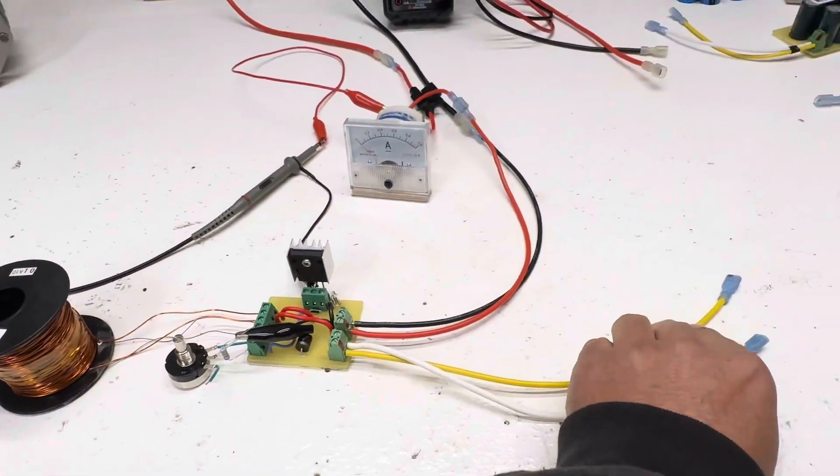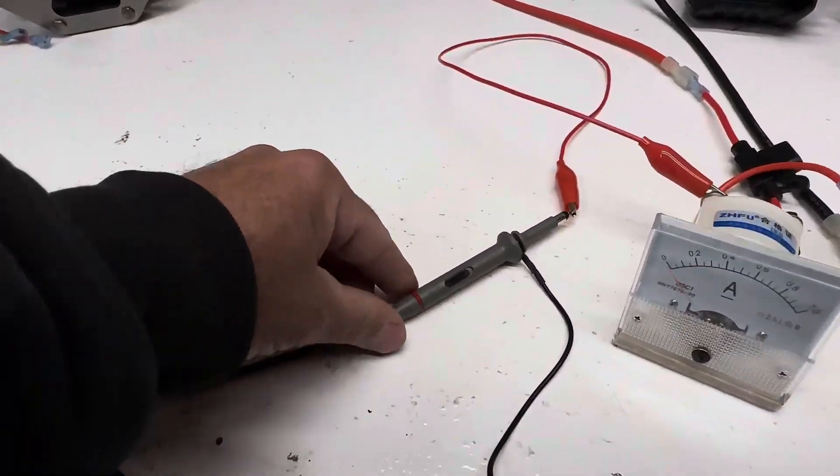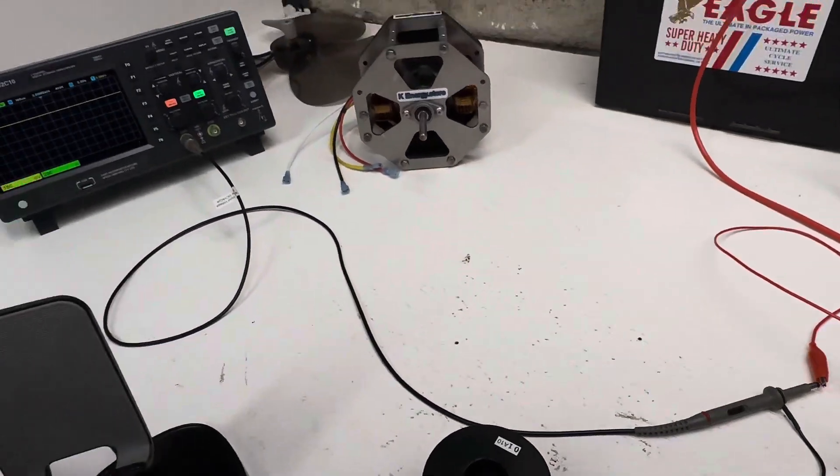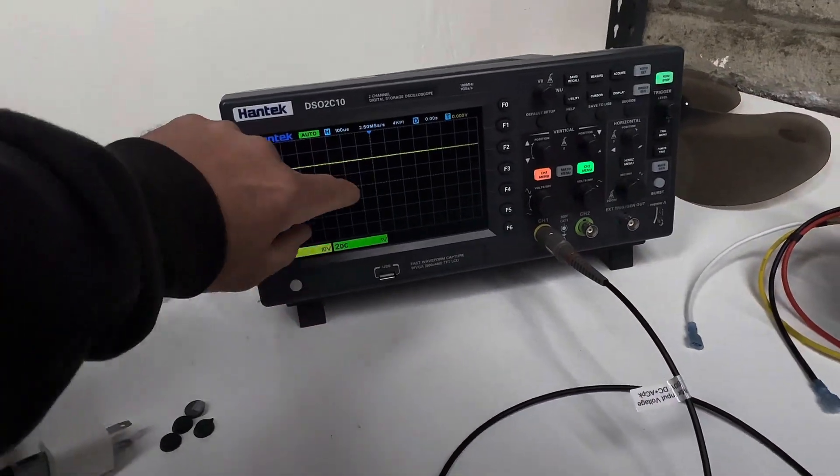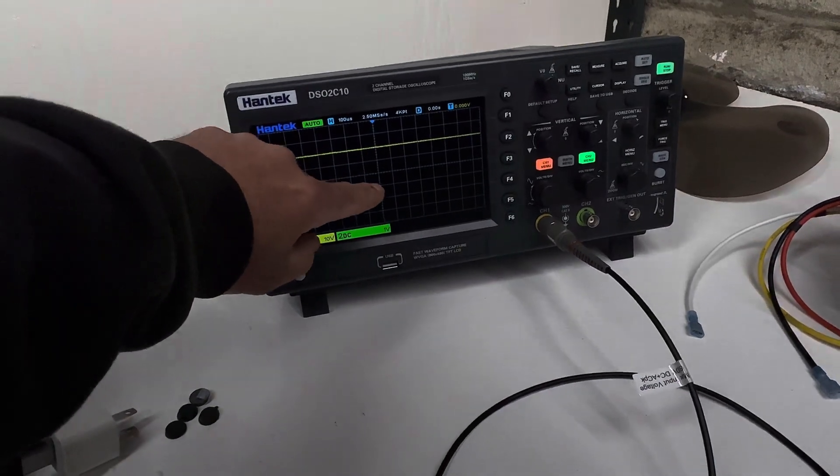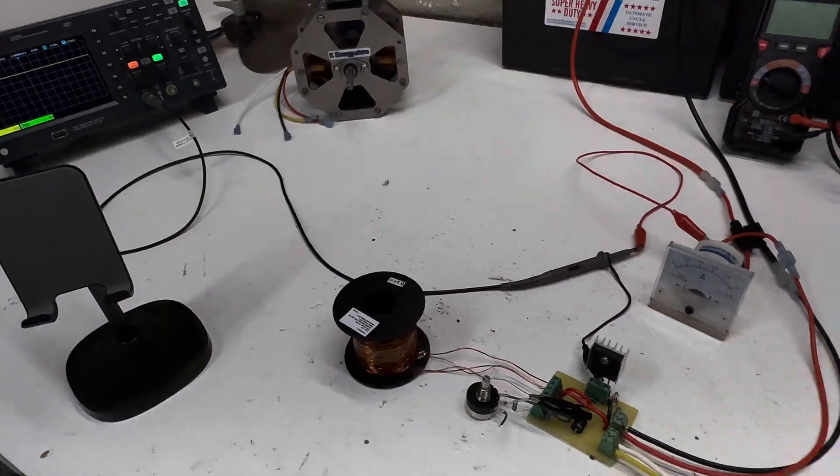Instead of having the output hooked up, I just have it hooked up to the scope. We're on the 10 times probe, so on the scope over here I have this lifted up to 20, so each square is going to be 100 volts.